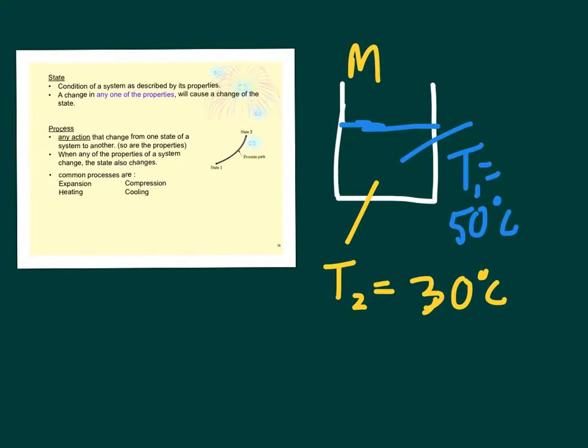So now let's have a look at what does it mean by process. It says here, any action that change from one state of a system to another. So when any of the properties of a system change, the state also is going to change. Common processes that we have here are expansion, heating, compression and cooling.